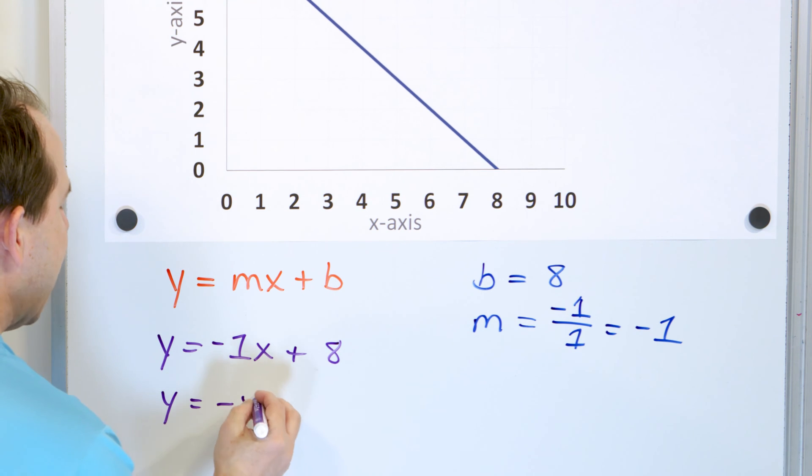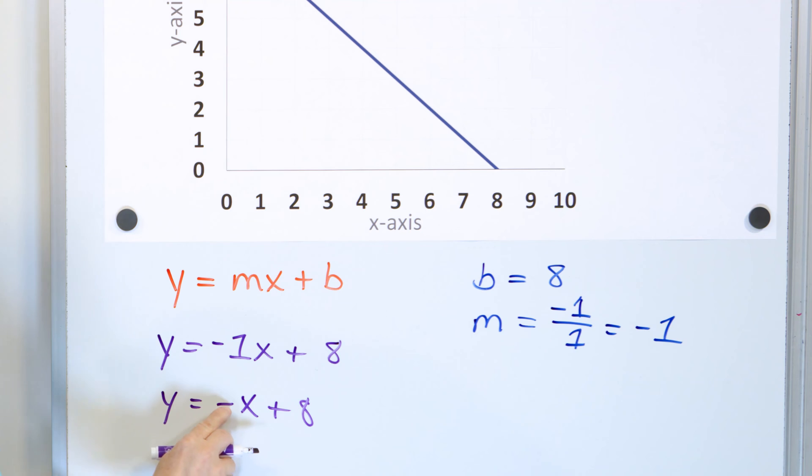But usually we don't write a coefficient of negative 1. Usually what we just say is negative x plus 8 because you know that there's always an invisible 1 here. So this is negative 1 times x plus 8. This is the best answer.